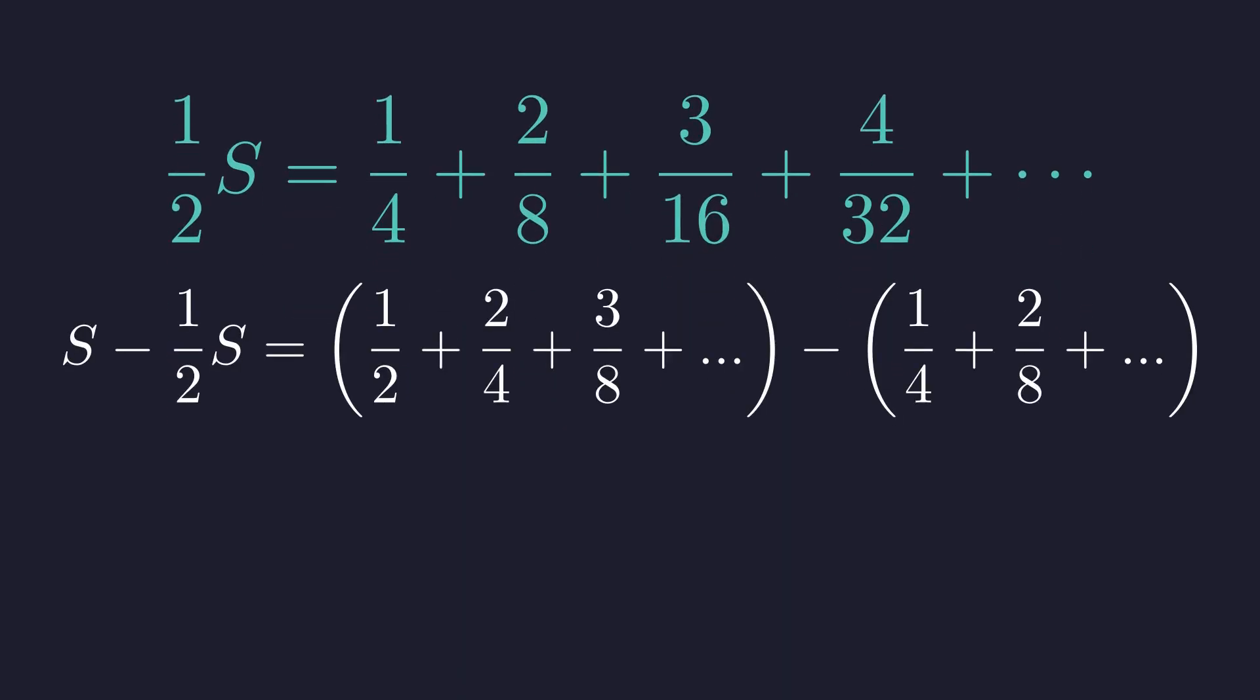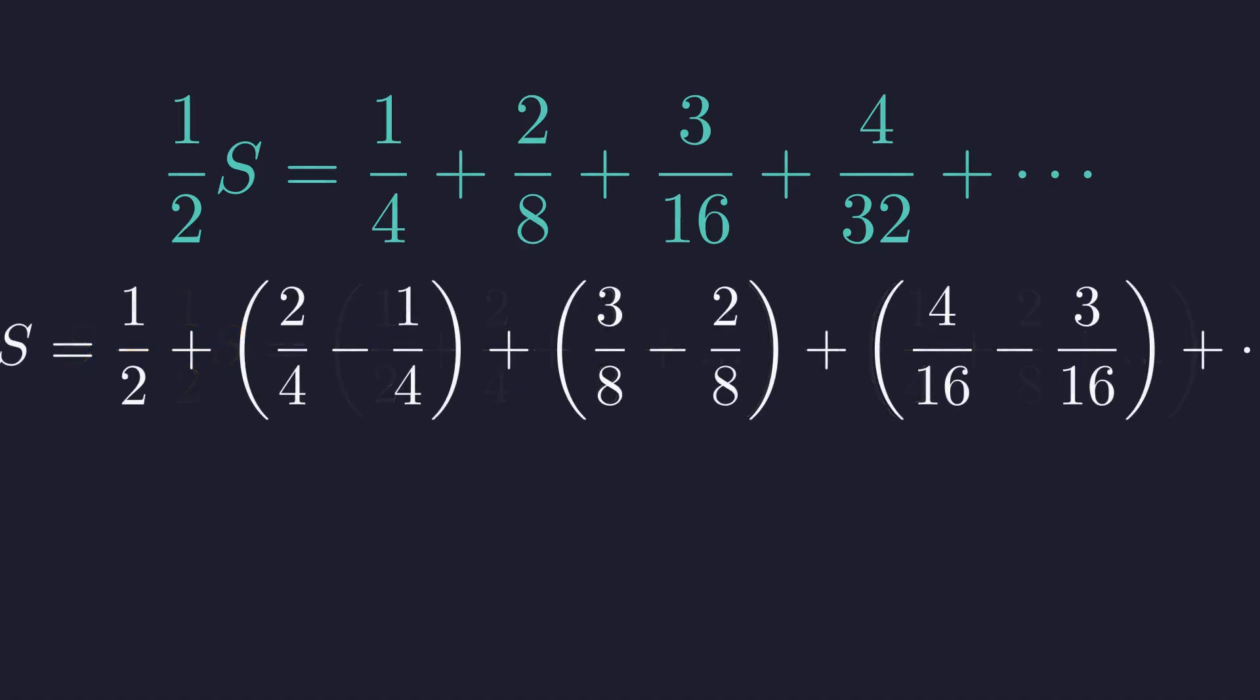Now subtract the second series from the original. On the left, that's just one-half s. On the right, when we line things up and subtract, we get one-half on its own, then two-fourths minus one-fourth, three-eighths minus two-eighths, and so on.